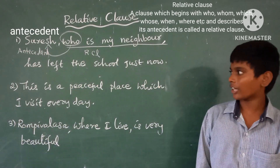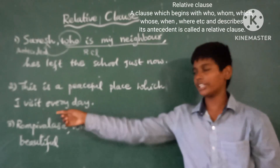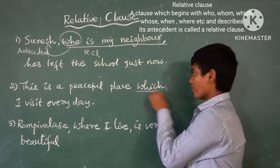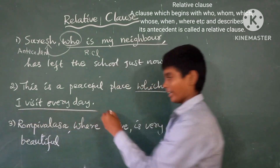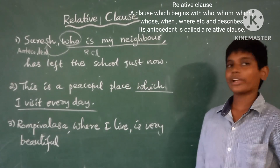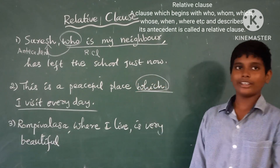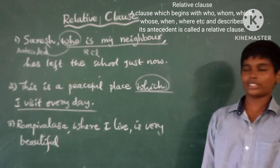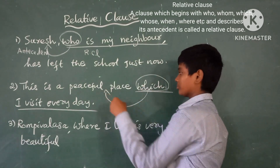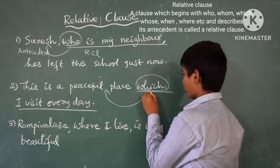Next example: This is a peaceful place which I visit every day. Here, 'which I visit every day' is a Relative Clause. Why? Because it begins with 'which' and describes its antecedent, 'a peaceful place'.